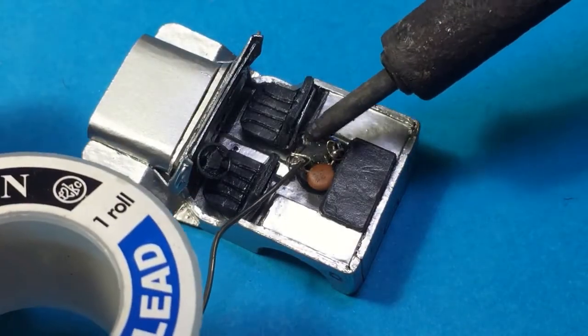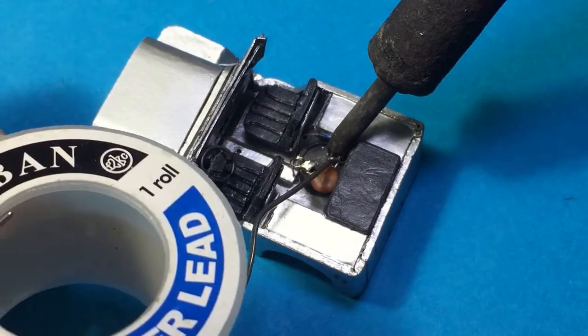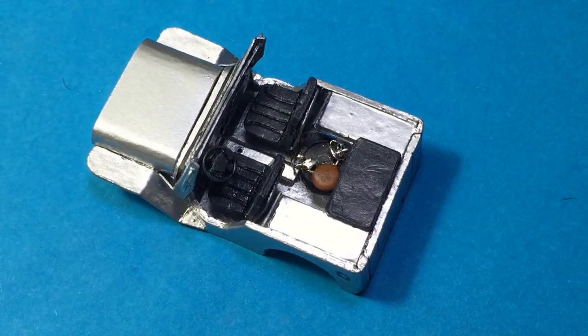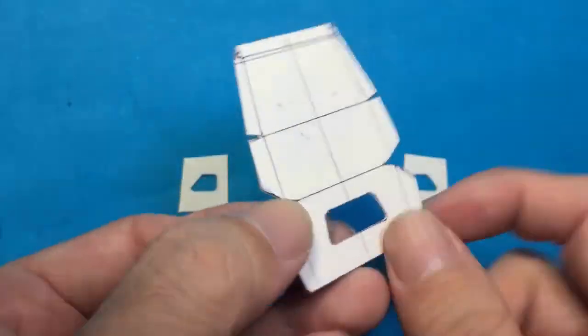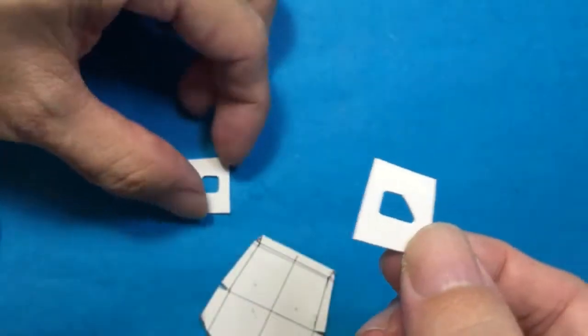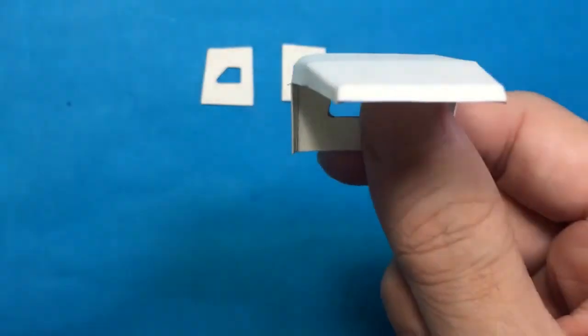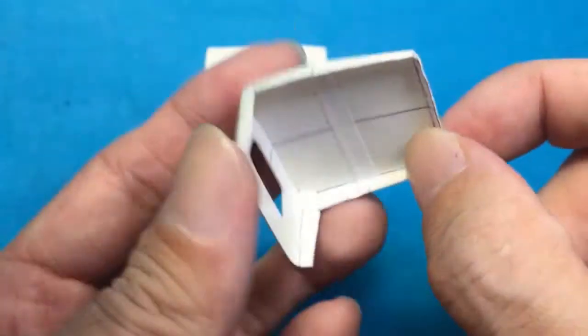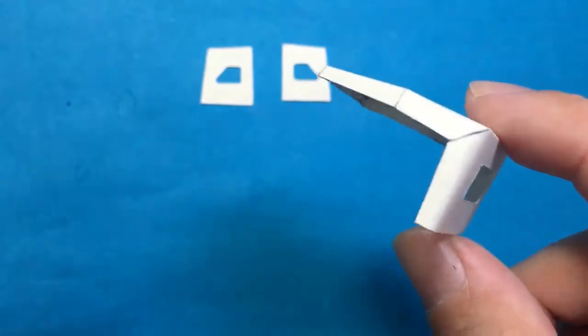Soldering them to the LED wires will allow me to power them up wirelessly. Now for the top tarp, I'm using the same card material used for the templates. I folded and glued it into shape, then added the side windows.